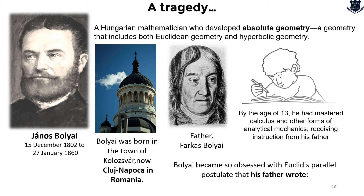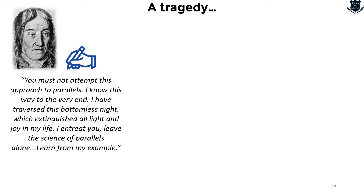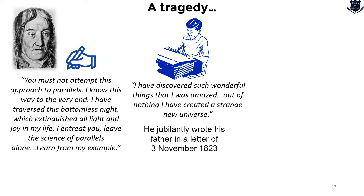Bolyai became so obsessed with Euclid's parallel postulate that his father wrote to him: 'You must not attempt this approach to parallels. I know the way to the very end. I have traversed this bottomless night which extinguished all light and joy in my life. I entreat you, leave the science of parallels alone and learn from my example.' However, János persisted in his quest and eventually concluded in 1823 that the postulate is independent of the other axioms, and that different consistent geometries can be constructed from its negation. On the 3rd of November 1823, a jubilant János wrote to his father: 'I have discovered such wonderful things that I was amazed — out of nothing I have created a strange new universe.'